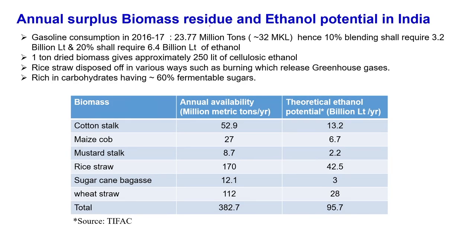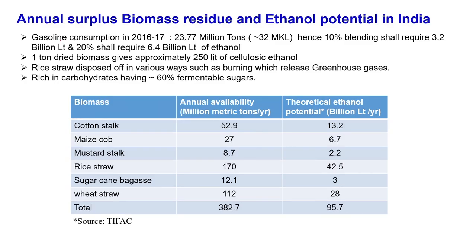Now, looking at annual surplus biomass residue and ethanol potential — biomass to fuel, primarily focusing on ethanol. Gasoline consumption in 2016–17 was around 23.77 million tonnes, which is 32 million kilolitres. The government allows 10 percent blending, requiring close to 3.2 billion litres, and 20 percent blending, which will shortly be allowed, shall require 6.4 billion litres of ethanol. There is a felt need to produce this ethanol from bio-based methods.